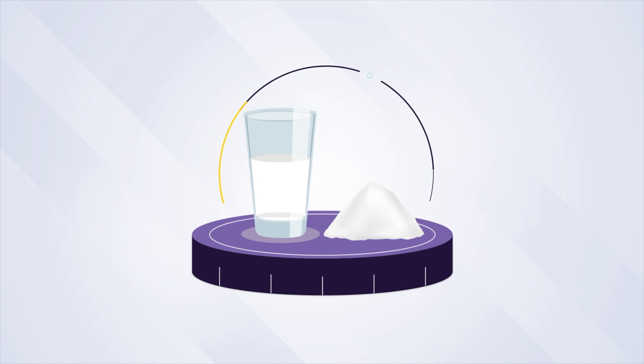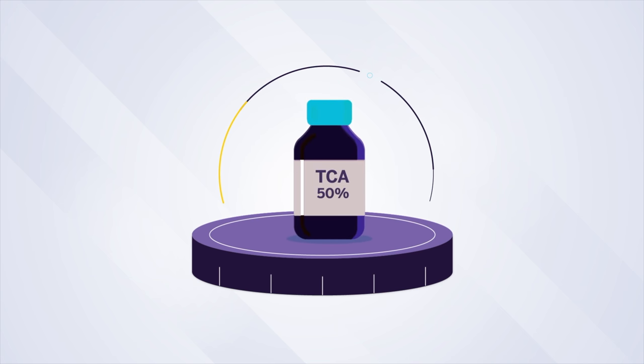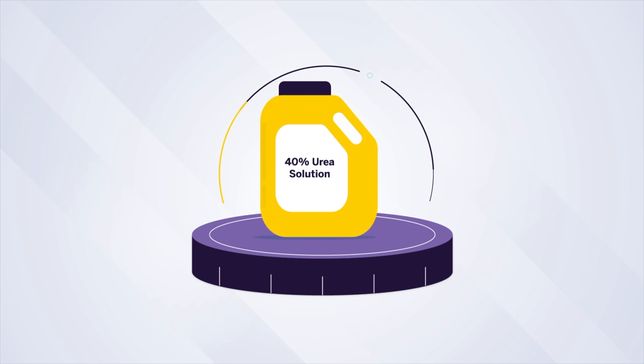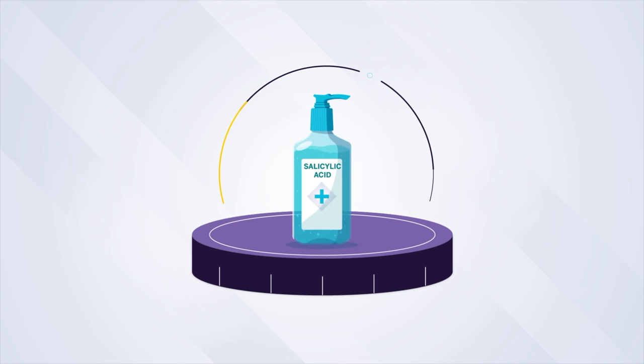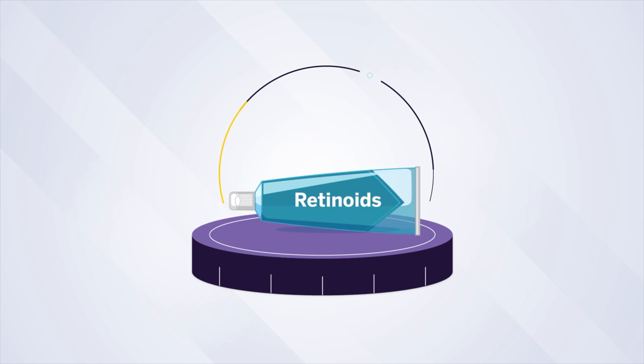Baking soda rinses half to 1 teaspoon of baking soda in 1 cup of water, 3% hydrogen peroxide rinses, 50% trichloroacetic acid application, 40% urea solution application, salicylic acid application, topical and oral retinoids, vitamin B complex, thymal application.